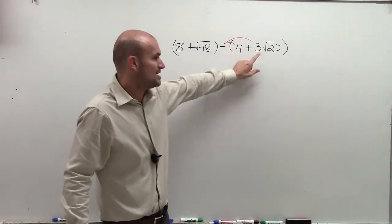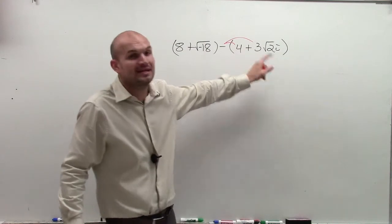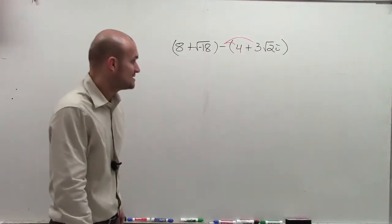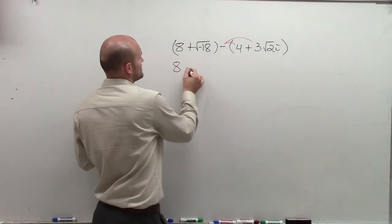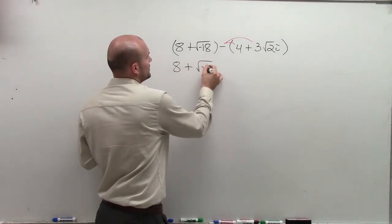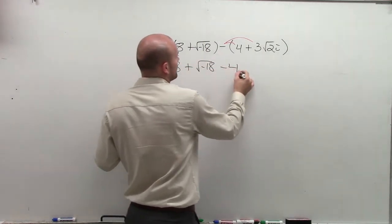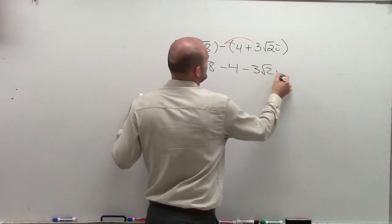You're also subtracting your 3 times square root of 2 times i. So what I'm going to do is I'm going to rewrite this as 8 plus square root of negative 18 minus 4 minus 3 square root of 2 times i.